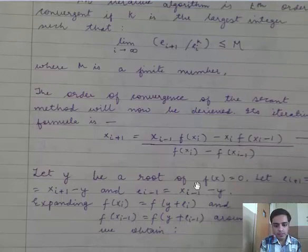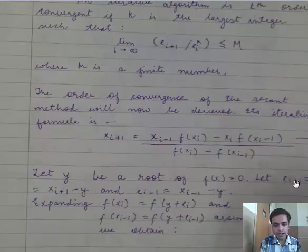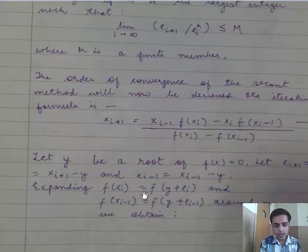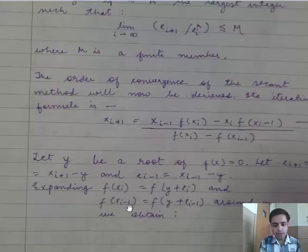Now let y be a root of f(x) equals 0. Let ei+1 equal xi+1 minus y and ei-1 equal xi-1 minus y. Expanding f(xi) and f(xi-1) around y we obtain.